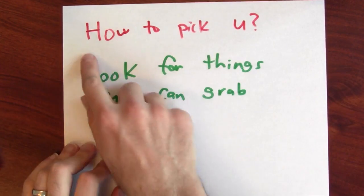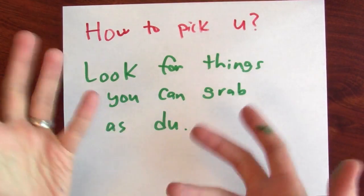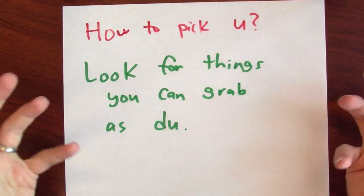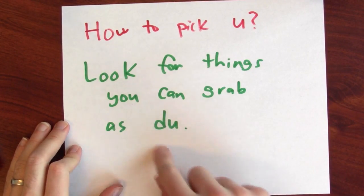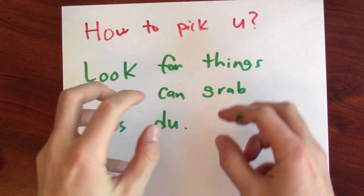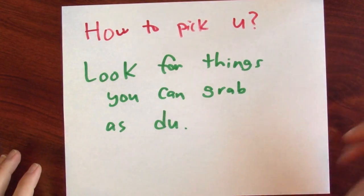Integrating usually requires some sort of creative flash of insight. For u substitution in particular, there's a ton of creativity in picking the best u. So if you're looking for how to pick u, what should you make u equal for your u substitution? I'd look for things that you can grab as du. Try to find pieces of the integrand that look like the derivative of something.